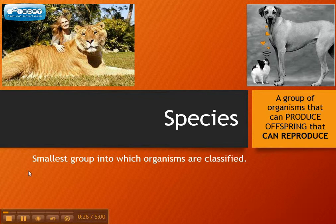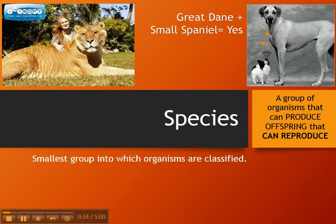Let's take a look at this Great Dane versus the small spaniel. Those are the same species. Even though they look like two very different types of creatures — because the Great Dane is so big and the spaniel is so small — they're actually the same species. If they were to mate, they would be able to have puppies, and those puppies would be able to have puppies one day.